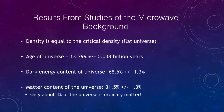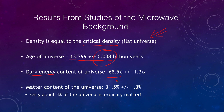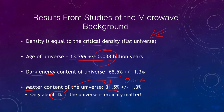The results show that the density is equal to the critical density, telling us the universe is very flat. The age of the universe is close to 13.8 billion years with only a very small error. Dark energy accounts for 68.5% of the universe, while the matter content — including ordinary and dark matter — is only 31.5%. Only about 4% of the universe is ordinary matter, so dark matter and dark energy together make up about 96% of the mass-energy in the universe.